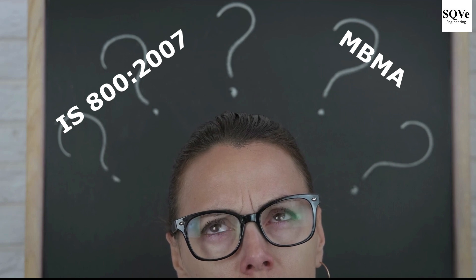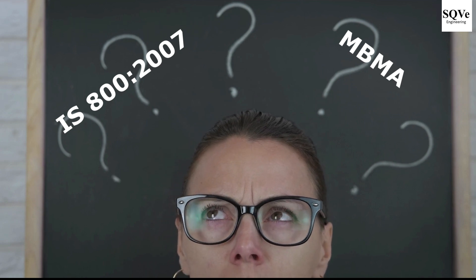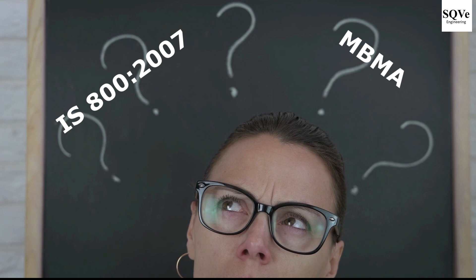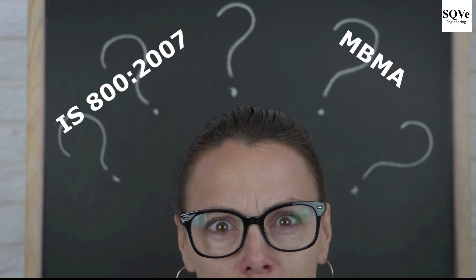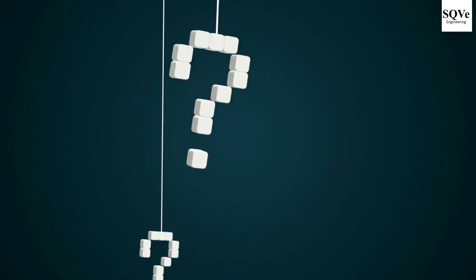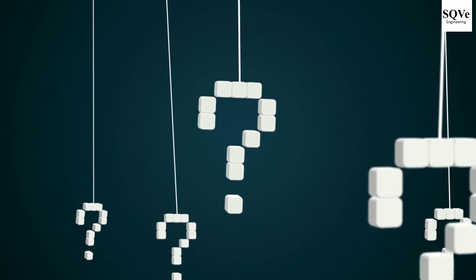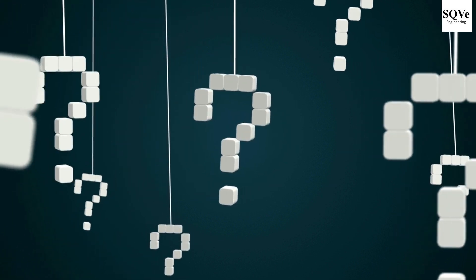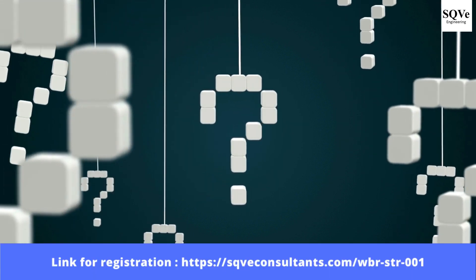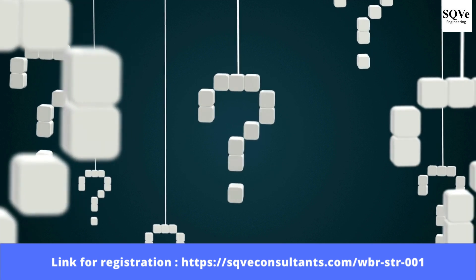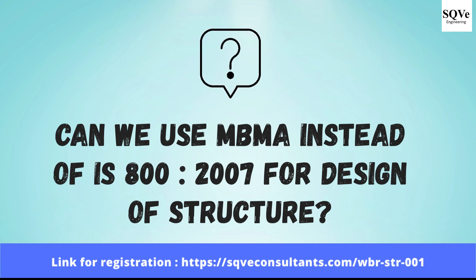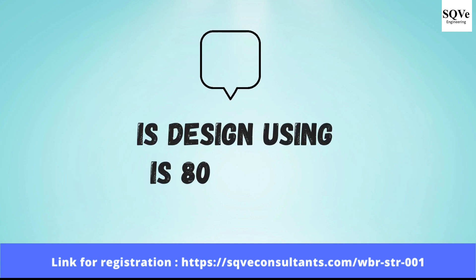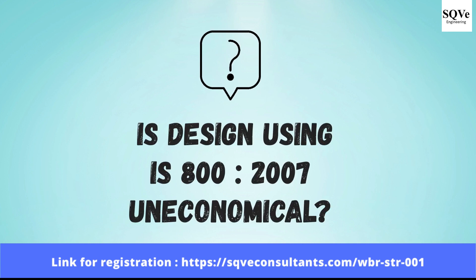For design of pre-engineered buildings and steel structures, should we consider IS 800:2007 or MBMA? We have received many queries from engineers regarding this. A few of the queries are: Can we use MBMA instead of IS 800:2007 for design of structures? Is design using IS 800:2007 uneconomical?